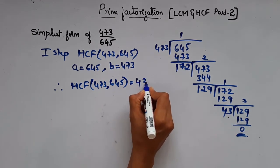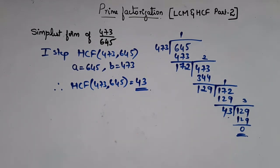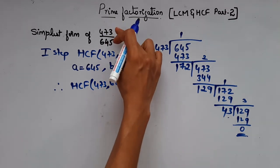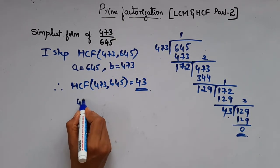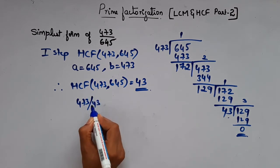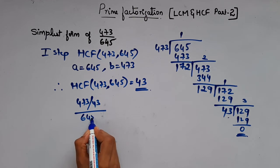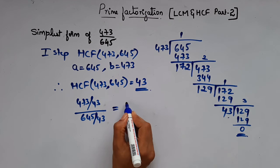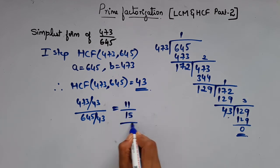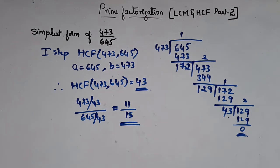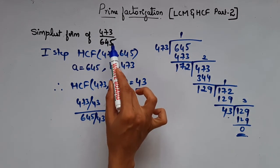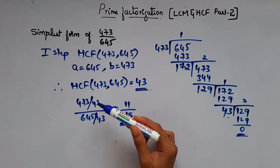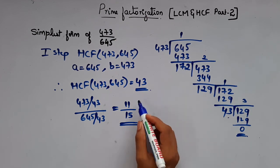43 is your HCF. Once you get the HCF, you have to divide the numerator and denominator by 43. That is 473 divided by 43, and 645 divided by 43. So when you do this, you will get 11 by 15. So this is the simplest form. I repeat, first you have to find HCF of those two numbers, and then divide that HCF for both numerator and denominator. That will give you the simplest form.